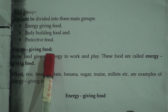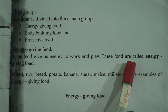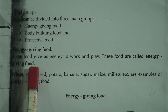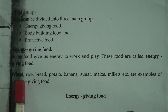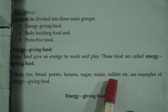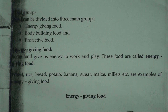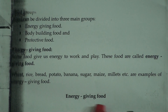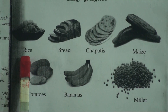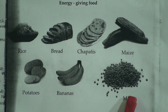Energy giving food — food gives us energy to work and play, and these foods are called energy giving food. Wheat, rice, bread, potato, banana, sugar, maize, millet, etc. are examples of energy giving food. This food gives us energy so that we can work properly. Here is a picture of energy giving food like rice, bread, chapatis, maize, potatoes, bananas, and millets.